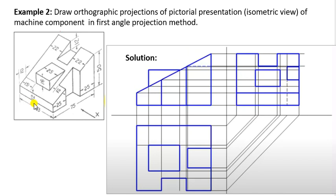In isometric view we are looking from the observer's left side, and in orthographic projection it appears on the right side of the front view.